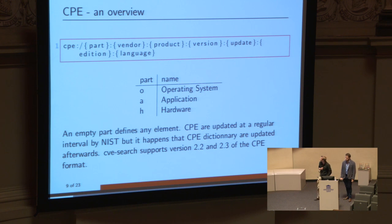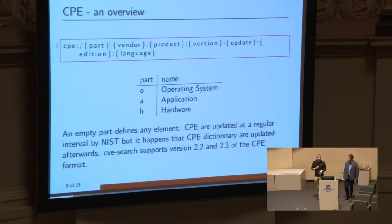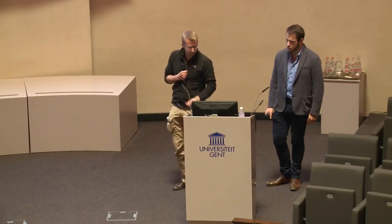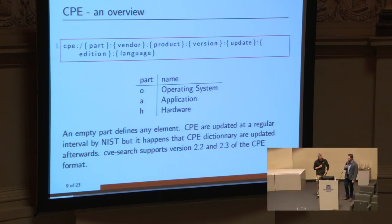What is CPE? CPE is a structured, formatted piece of information used to describe a software or application. It's designed by NIST and comes in two versions: 2.2 and 2.3 — we support both. Each software entry is split into parts: whether it's an OS element or an application, then vendor, product, version, update, and sometimes language — because some vulnerabilities only apply to specific versions or a specific language. Only the vendor, product, and version fields are required.